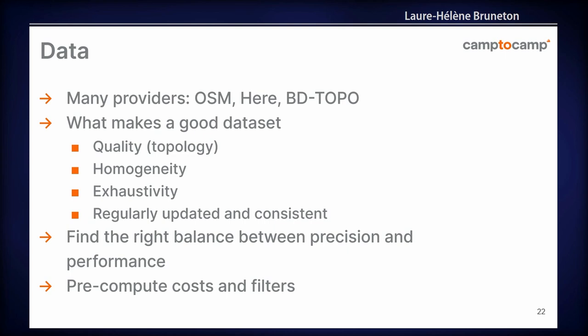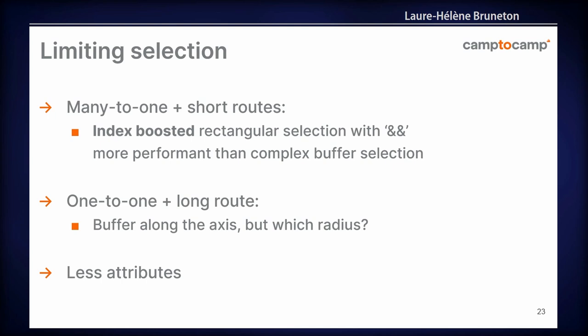About data: we tried many providers — OSM, HERE, the French BD TOPO. You have to choose depending on your use case and what you can get. The most important part is finding the right balance between precision and performance, because more precision usually means more edges, and more edges means less performance. I would also recommend pre-computing as much as possible for cost and filters before using your data. PG Routing most likely only needs cost and whether you will use the edge — nothing else.